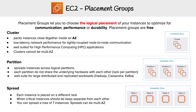First, let's look at clustered. Cluster packs instances close together inside an AZ, and they're good for low latency network performance for tightly coupled node-to-node communication — when you want servers to be really close together so communication is super fast. They're well suited for high performance computing (HPC) applications, but clusters cannot be multi-AZ.